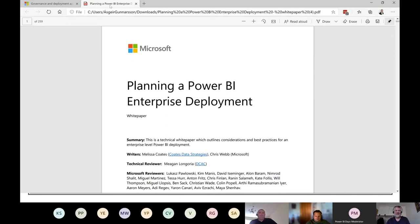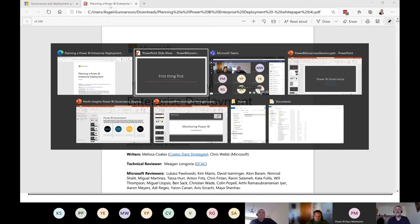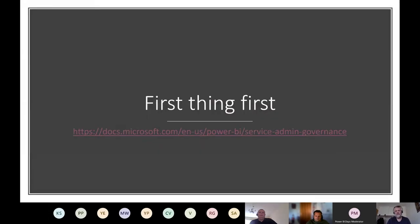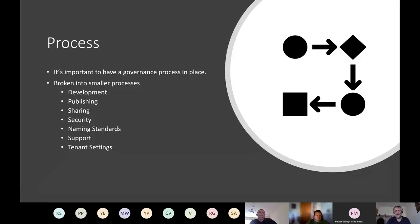Now I want to talk about the methods — how you should apply this governance strategy to your Power BI implementation. Starting with the Process pillar: as I said, it's the backbone of your governance strategy. You will most likely have more than one process — smaller ones covering development, publishing, sharing, security, naming standards, support, and tenant settings.